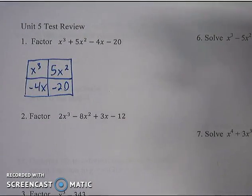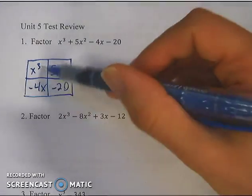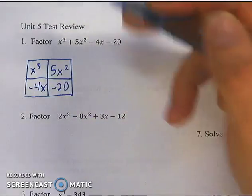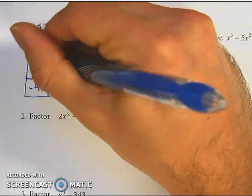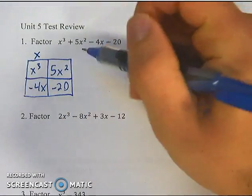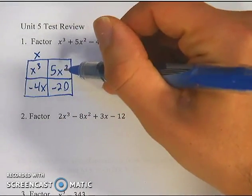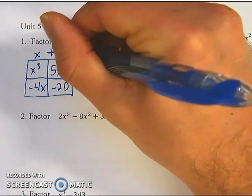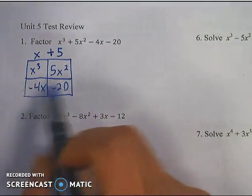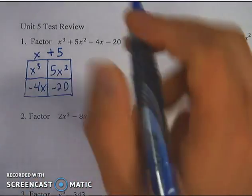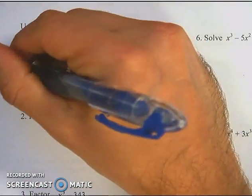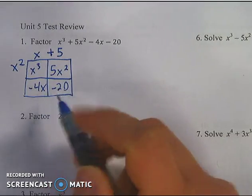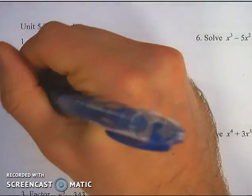x cubed plus 5x squared minus 4x minus 20. Once you've written the terms into the box, ask yourself: what do these two terms have in common? Well, they both have an x. What do these two terms have in common? They both share a positive 5. What do these two terms share? That appears to be an x squared. And what do these two terms have in common? A negative 4.